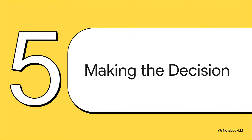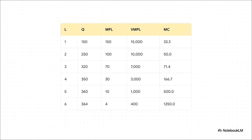Moment of truth. Let's apply both rules to our book publisher and find the single definitive answer. Look closely at that fourth worker: their VMPL is $3,000, but the wage is $5,000 — so the first rule says don't hire them. Now look at the marginal cost: it's $166.70, but the price of the book is only $100 — so the second rule also says stop producing. Both rules tell us to stop before we hire worker number four. The optimal number of workers to hire is three. That is the sweet spot — that's how this publisher maximizes their profit.